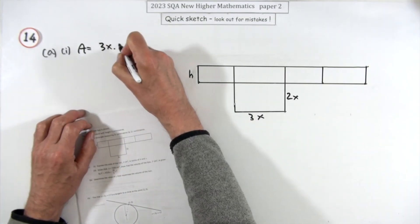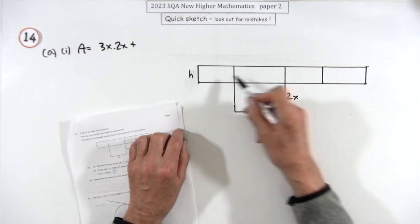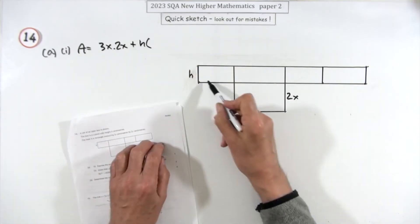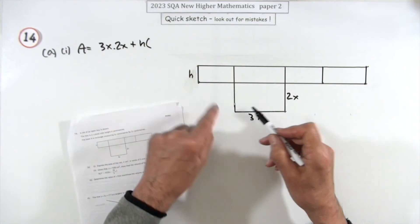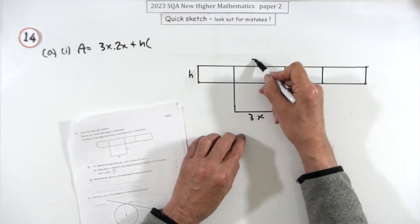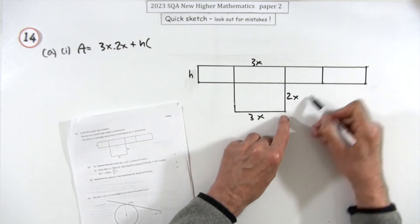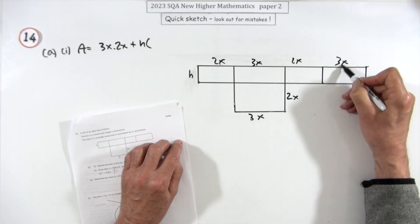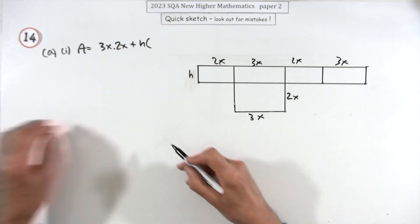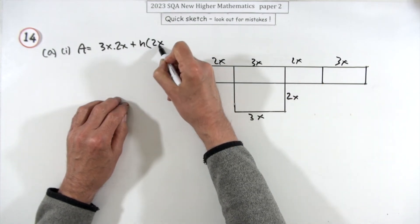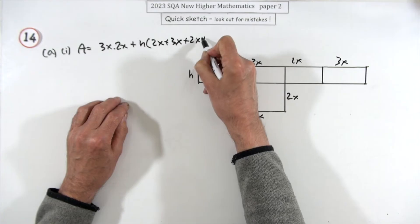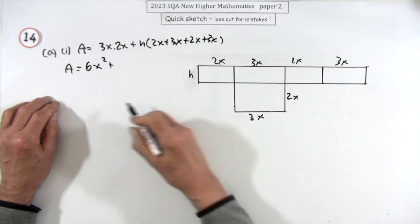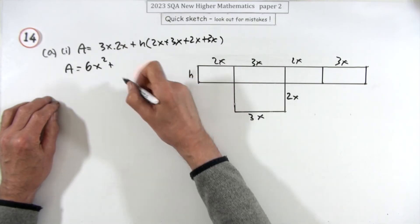You've got the base: 3x times 2x. Then those four side parts make one big rectangle — h times the sum of all those lengths. That length is 3x, the next folds onto it so that's 2x, then 2x again, then back around the front so another 3x. So the area is 6x² plus — summing 2x + 3x + 2x + 3x gives 10x — so 6x² + 10xh.